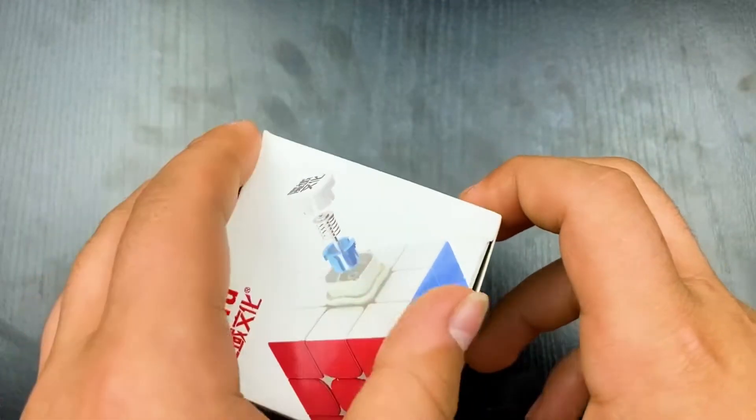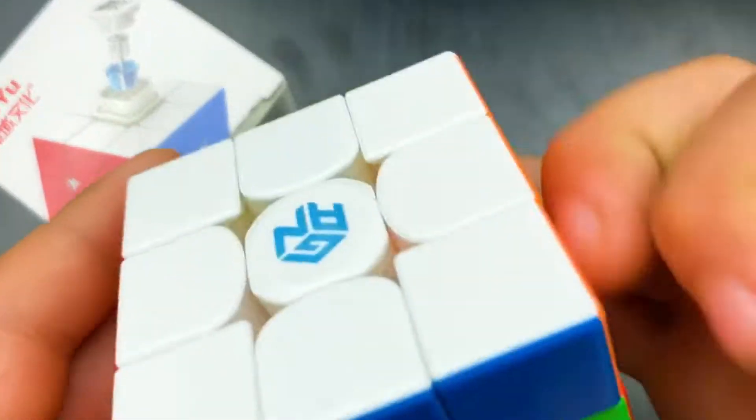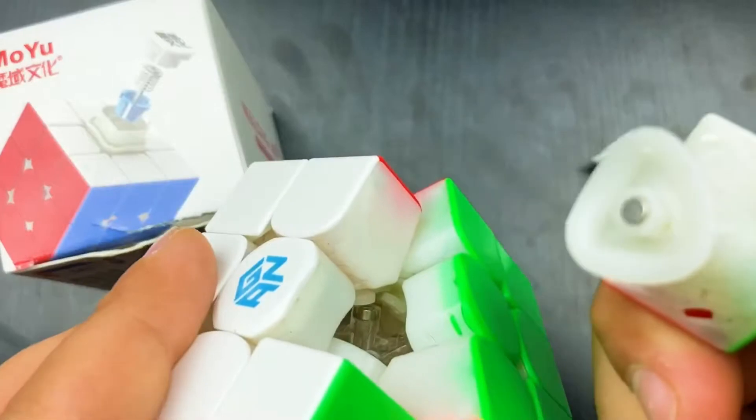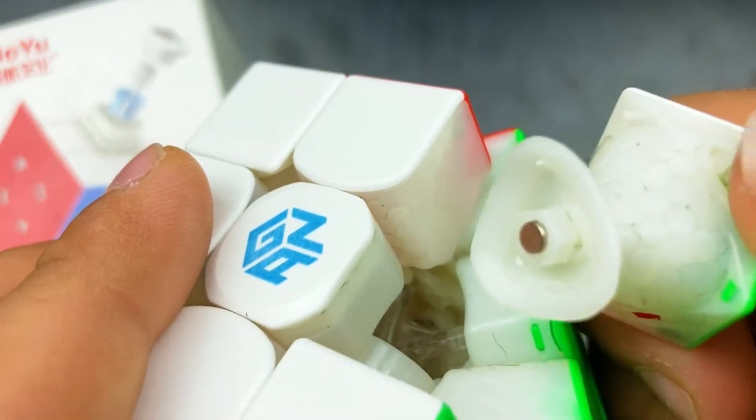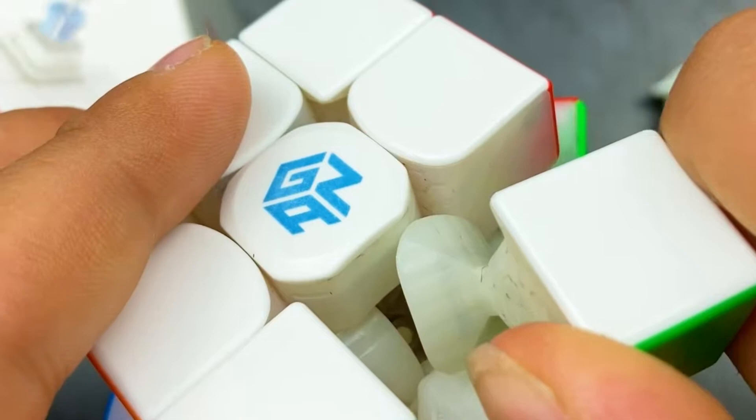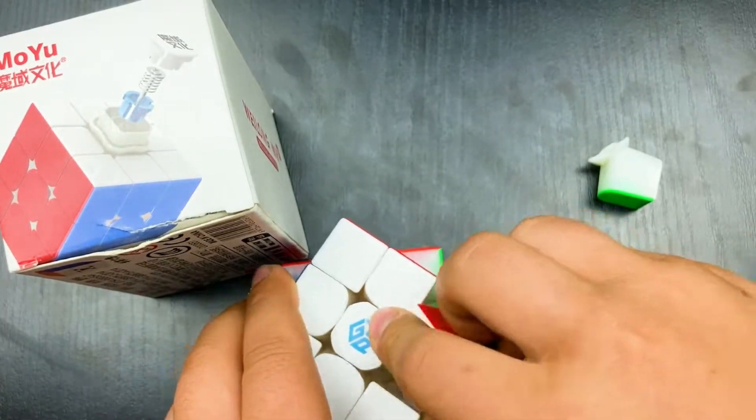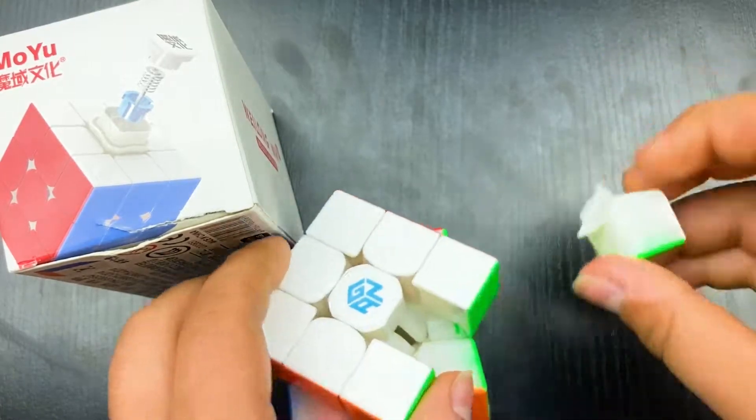This cube I believe is like 30 something dollars. It's definitely way cheaper than the GAN 11M Pro. This cube is the one that has the core magnets. I'm assuming it will look something like this. As you can see we have a core magnet on the piece that goes to the middle of the GAN 11M Pro. I believe it will pretty much look the same on the Weilong WRM 2021 Cubing Home Edition Lite.